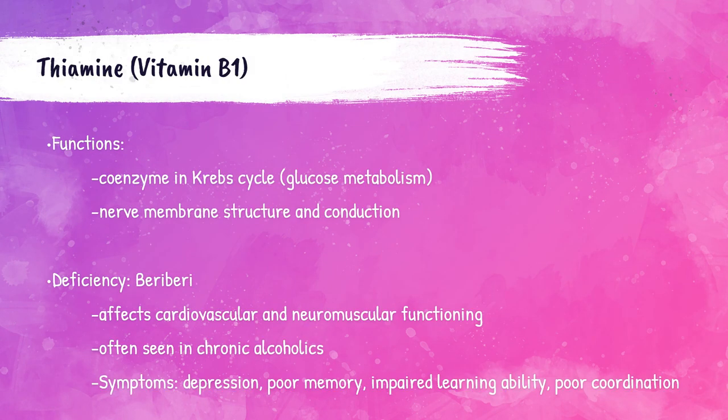Vitamin B-1, or thiamine, acts as a coenzyme in glucose metabolism. It is also an important vitamin in the structure of nerve membranes. Chronic deficiencies in vitamin B-1 cause a disorder called beriberi. Deficiencies of this vitamin in underdeveloped countries are usually due to poor diet. Alcoholism and cancer are leading causes of thiamine deficiencies in the United States. Beriberi affects the nervous and cardiovascular systems of the body — patients with this disorder can be depressed, have cognition and memory problems, and have poor coordination.